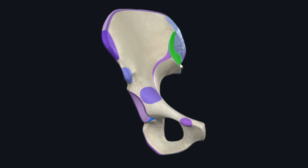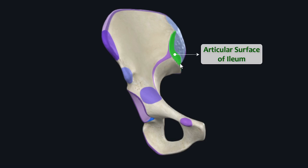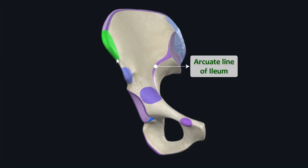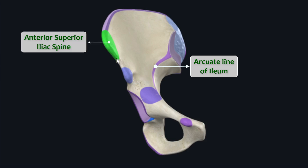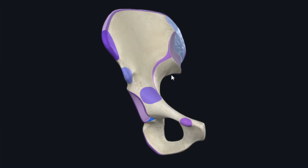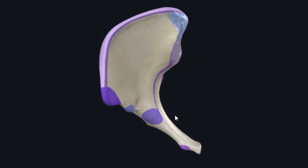This surface is the articular surface of ilium through which it articulates with the sacrum. This narrow ridge along the internal surface of ilium is the arcuate line. This blunt process marking the anterior end of the iliac crest is the anterior superior iliac spine, while this thick rough process along the anterior border of ilium is the anterior inferior iliac spine, located between the anterior superior iliac spine and the acetabulum.